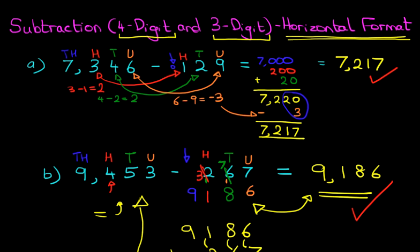That is how we do subtraction, the two methods of how we do subtraction of a four-digit number and a three-digit number using the horizontal format.